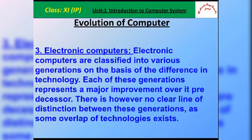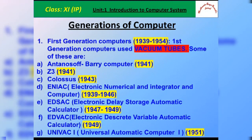First generation computers were introduced from 1934 to 1954, and they use the vacuum tube as their core technology. The Atanasoff-Berry computer, built by John Atanasoff and Clifford Berry in 1941, was the first electronic digital computer — remember this. The Atanasoff-Berry computer is the first electronic digital computer.